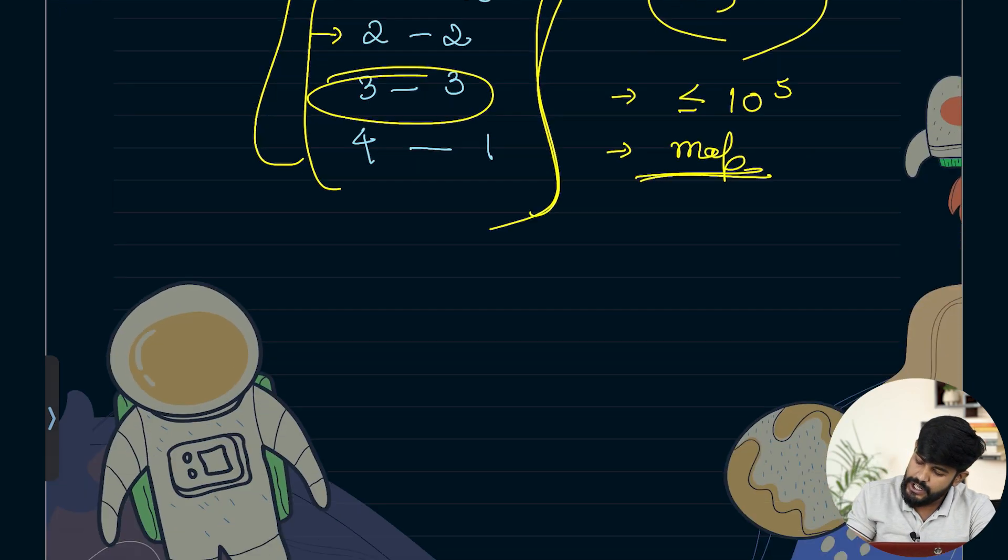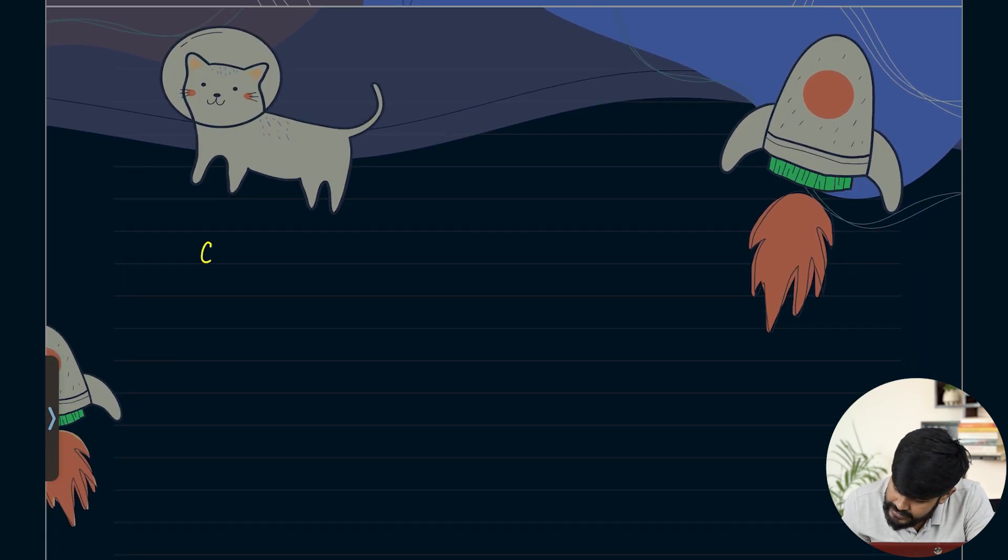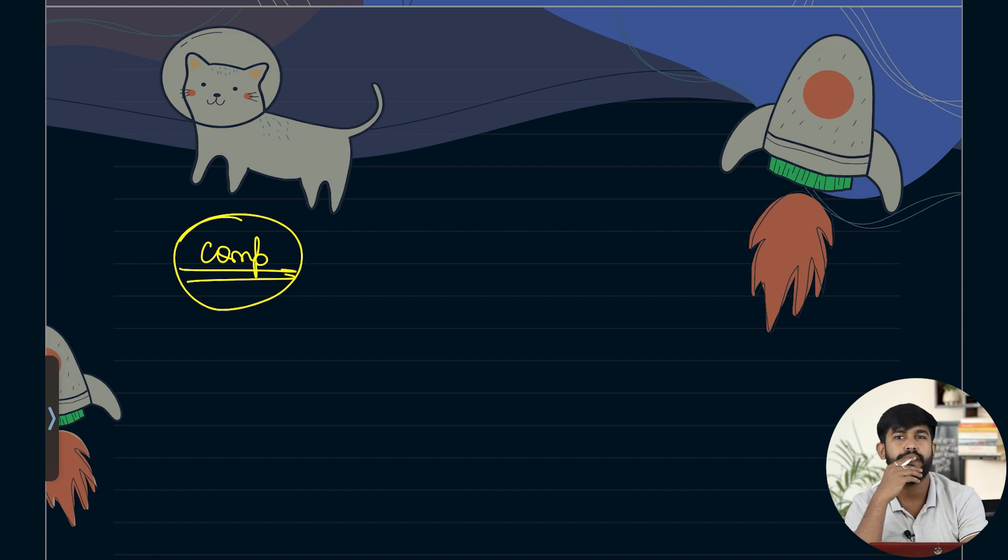Now the question is sorting based on frequency and value. So what we can do is we can use something like comparators. What are comparators? Comparators are special features.